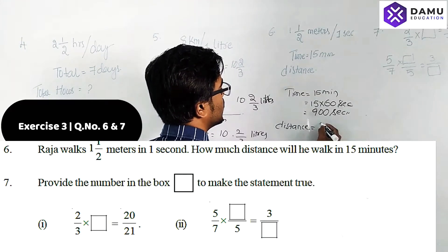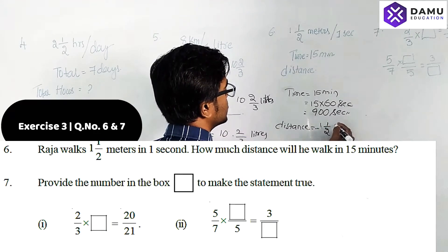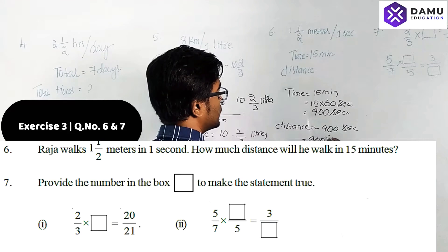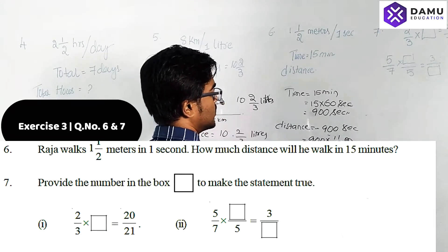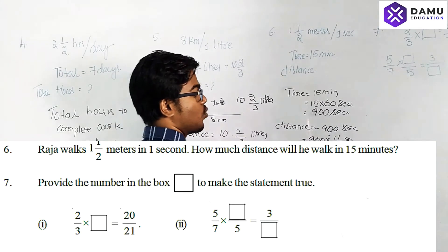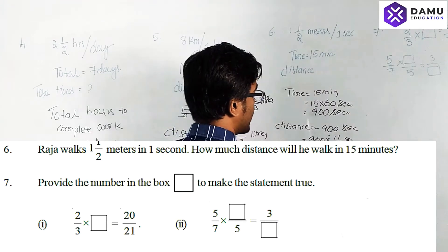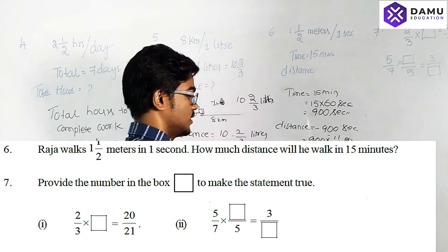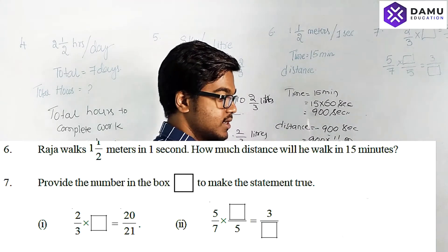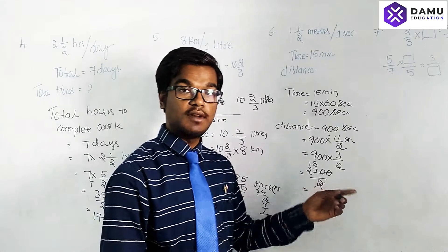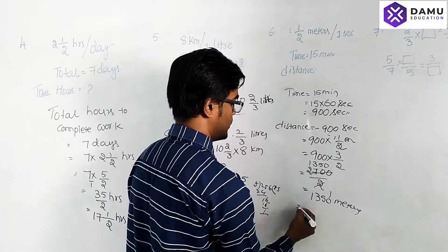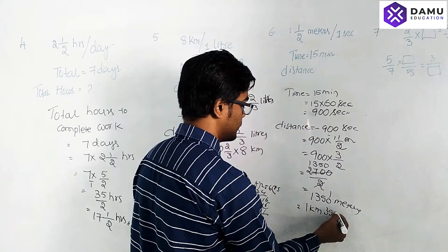Distance traveled equals 1 and 1/2 meters per second for 900 seconds. So 900 × 1½ meters. Converting: 1½ = 3/2, so 900 × 3/2 = 2700/2 = 1350 meters. That is 1 kilometer and 350 meters — so Raja walked 1 kilometer 350 meters.